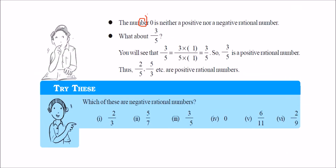0 is a special case. It is neither a positive nor a negative rational number. 0 is just a rational number.